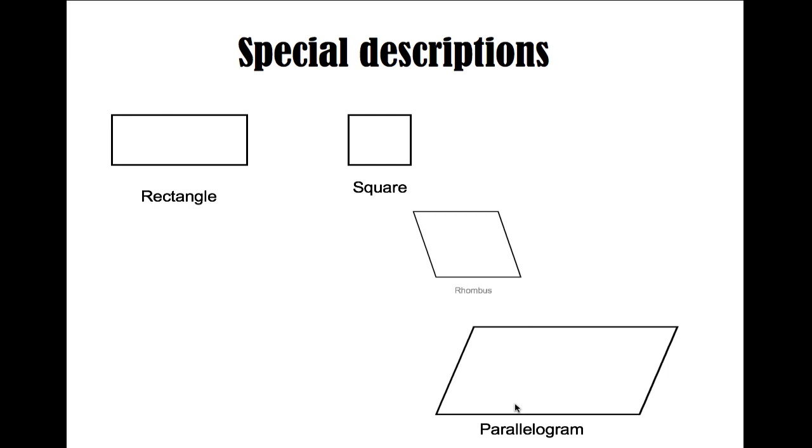This shape is called a rhombus. A rhombus is similar to a square in that it has four equal sides, and two pairs of those sides run parallel. The difference between a square and a rhombus is a rhombus does not have right angles.